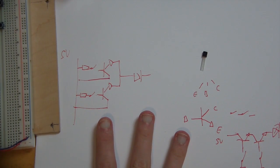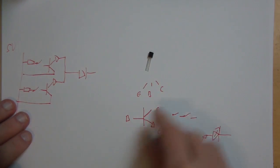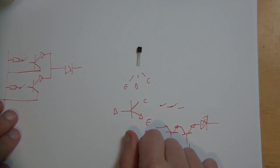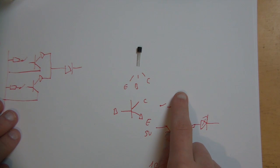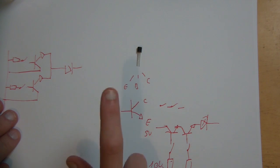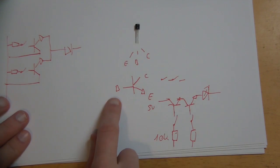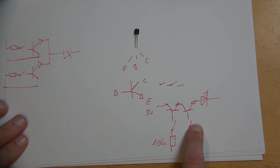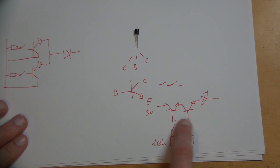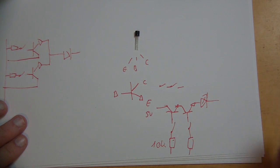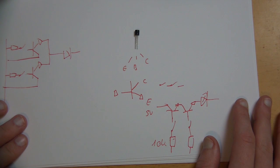Let's quickly recap. A transistor has three legs: emitter, base, and collector. The current is flowing from the collector to the emitter, but only if you have current at the base. Please put a 10k resistor between your switches and your base, otherwise this won't work. My name is MatMax, thanks for watching this episode, and tune in next time.